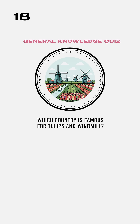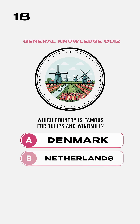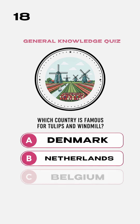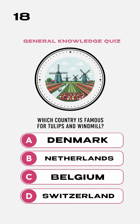Which country is famous for tulips and windmills? A. Denmark. B. Netherlands. C. Belgium. D. Switzerland.